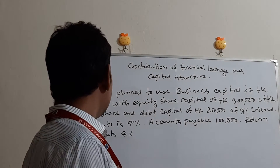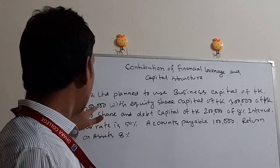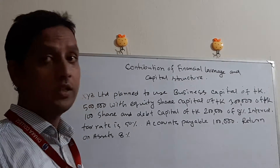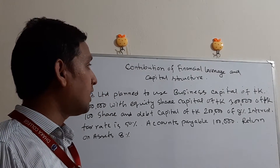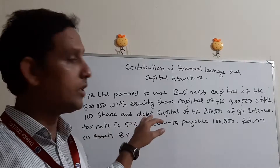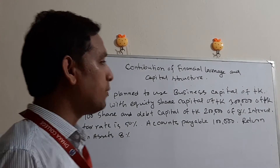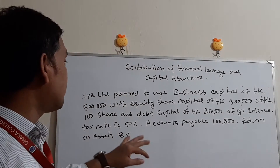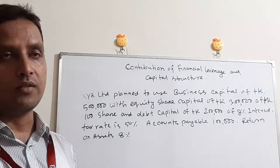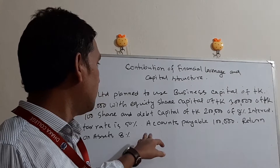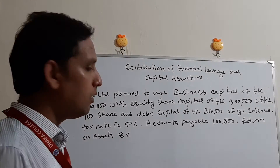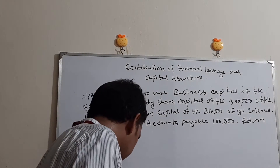XYZ Limited plans to use business capital of Taka 5 lakh, with equity share capital of Taka 3 lakh at Taka 100 per share, and debt capital of Taka 2 lakh at 8% interest. The tax rate is 50%, accounts payable is 1 lakh, and return on assets is 8%. We should determine whether the financial leverage is favorable or unfavorable.